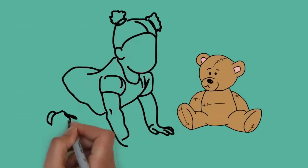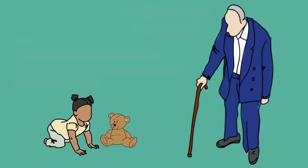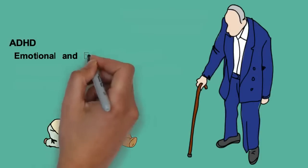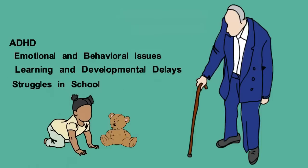With neurofeedback, anyone can improve their brain. We've trained children, teenagers, and adults from age 2 to 92. For children, it's often used for ADHD, emotional and behavioral issues, learning and developmental delays, and struggles in school.